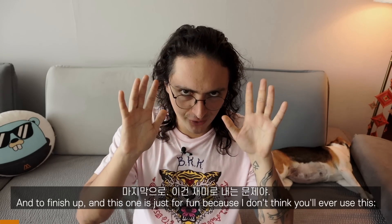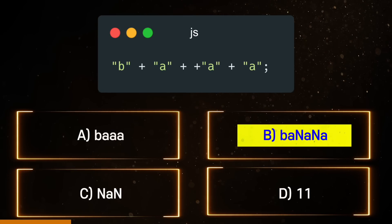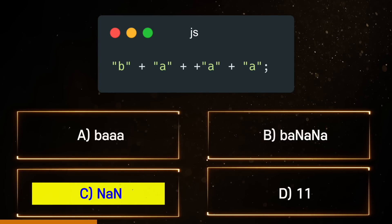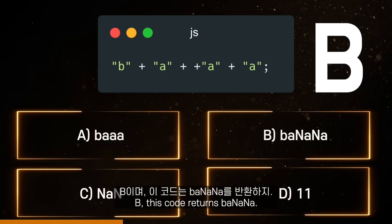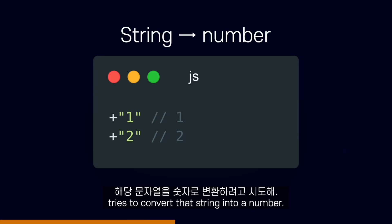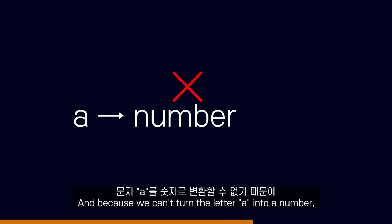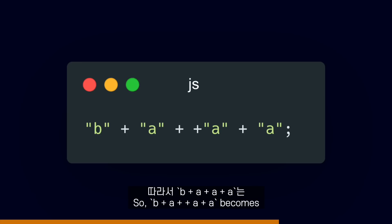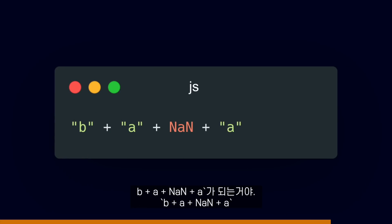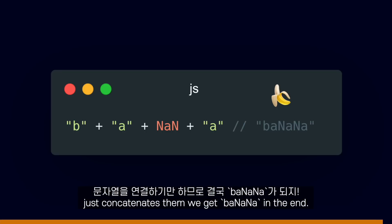And to finish up — this one is for fun because I don't think you will ever use this. What is the output of this code? A, 'ba'. B, 'banana'. C, not a number. D, 11. The answer is B — this code returns 'banana'. In JavaScript, the plus sign next to a string tries to convert that string into a number. In our banana case, the second 'a' is next to a plus sign, and because we can't turn the letter 'a' into a number, we get not a number instead. So 'b' plus 'a' plus plus 'a' plus 'a' becomes 'b' plus 'a' plus NaN plus 'a'. And because the plus sign used with strings just concatenates them, we get 'banana' in the end.